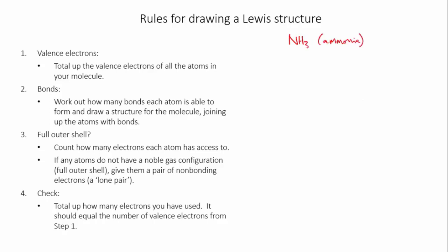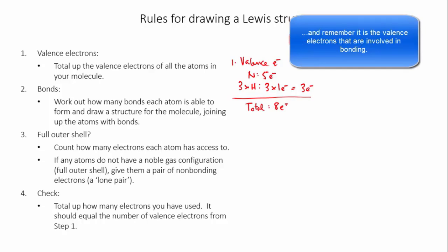So the first step whenever you're drawing a Lewis structure is to total up the valence electrons of all the atoms in your molecule. So we've got one nitrogen, which we know has five valence electrons because it's in group five, and we have three hydrogen atoms, which each have one valence electron, which equals a total of three electrons. Now if we add all of those up, we have a total of eight valence electrons from all of our atoms.